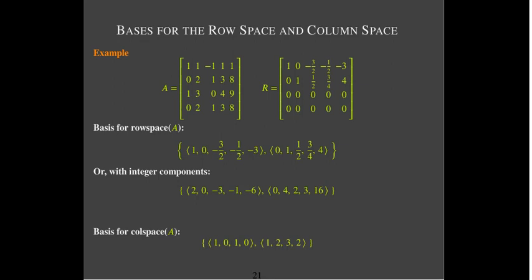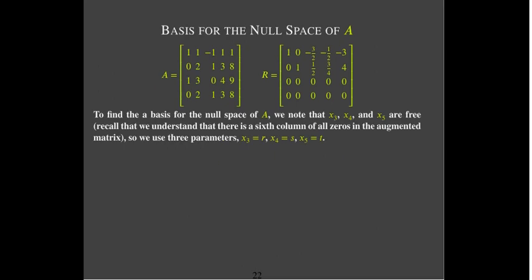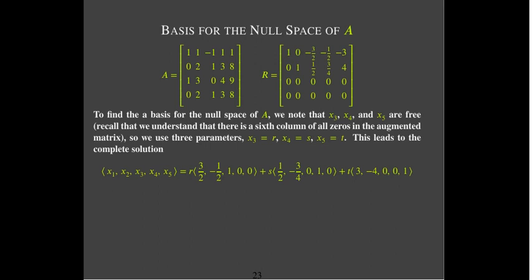For the null space, I need to find the solution to Rx equals zero. I have x1, x2, x3, x4, and x5. Only x1 and x2 are leading, so the other three are free variables. I should expect to find three basis vectors. If I set x3 equal to parameter R, x4 equals parameter S, and x5 equals parameter T, then I'll get the complete solution.